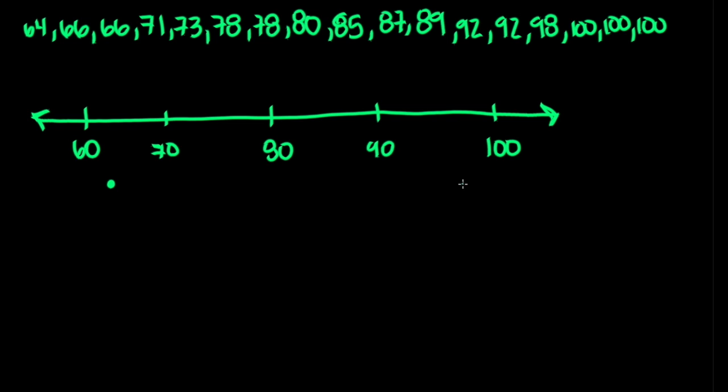The next easiest dot is the final one at the very top, which represents the highest score. Our highest score is 100, so we're going to put our highest dot there. Now remember that our other three dots are the first quartile, the median, and the third quartile.